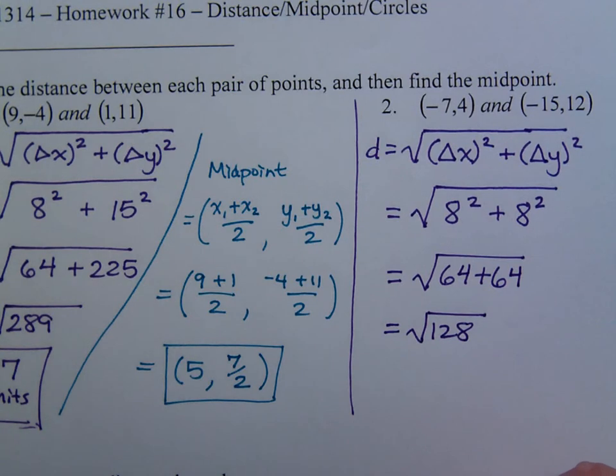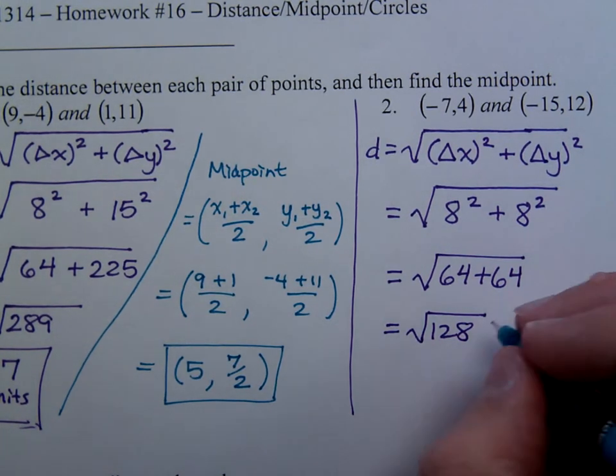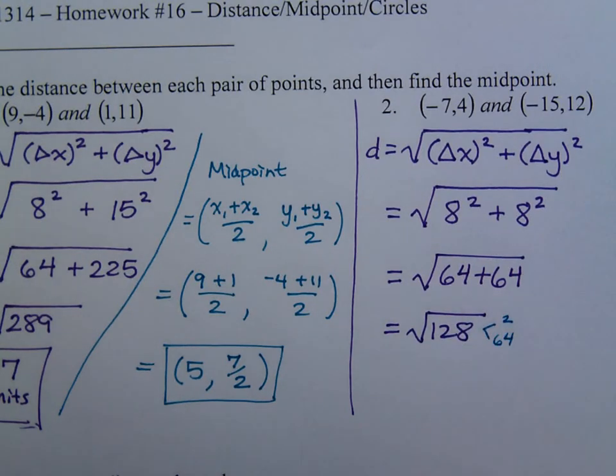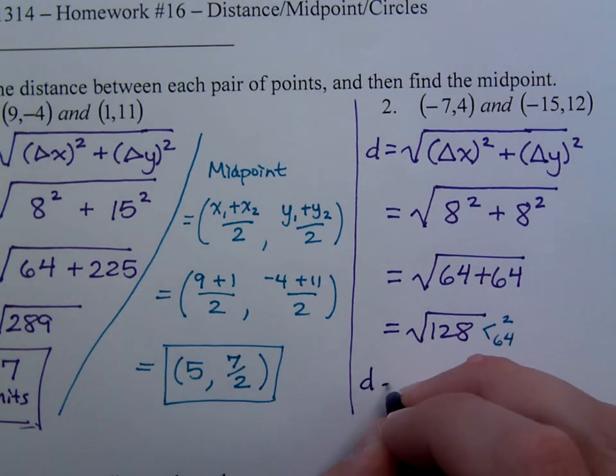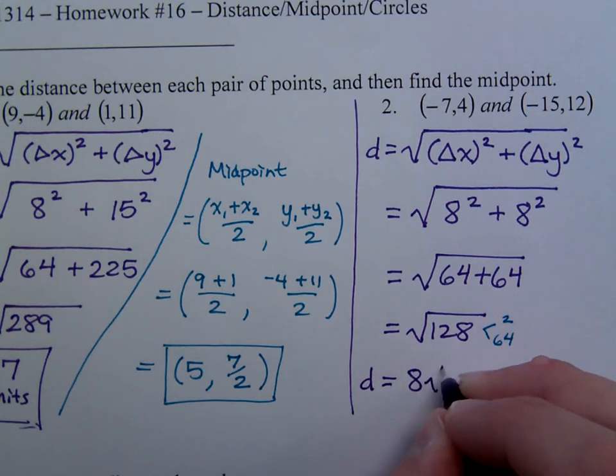Now if you're paying attention here, you see that 128 comes from having two 64s. So if you were trying to simplify this, this is 2 times 64, so the distance is equal to 8 square roots of 2 units.